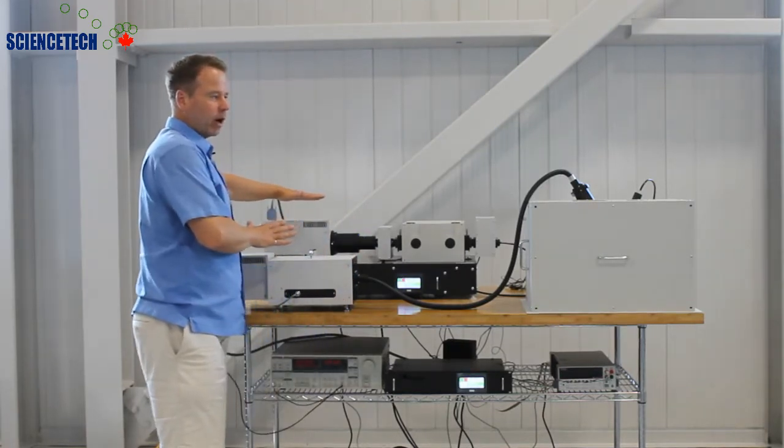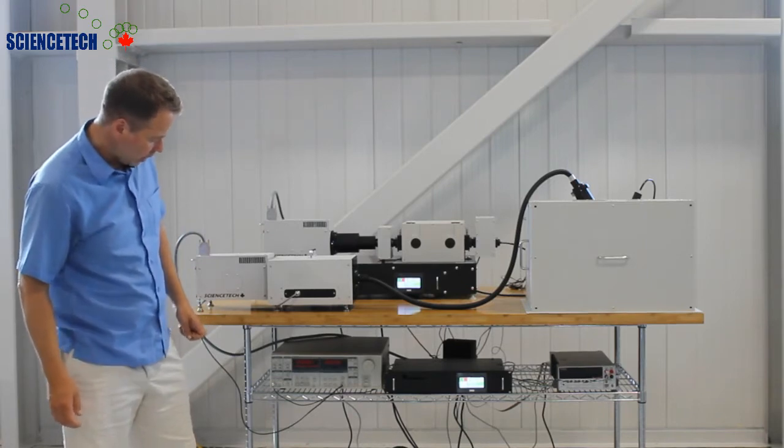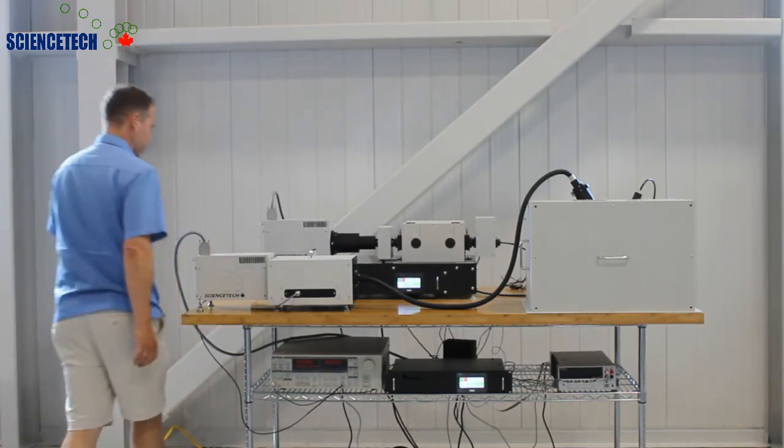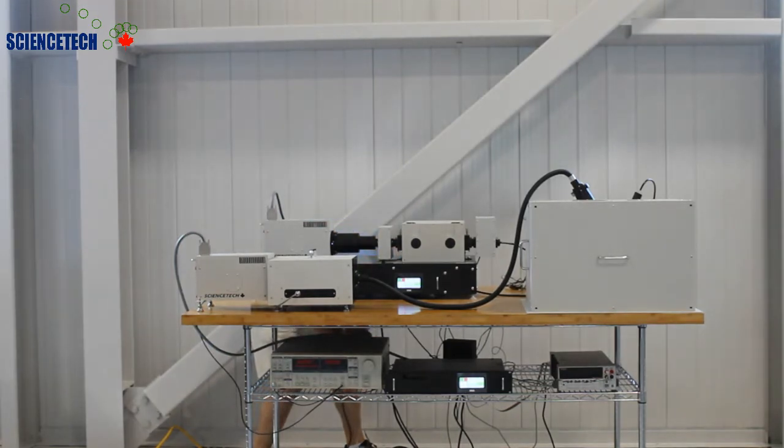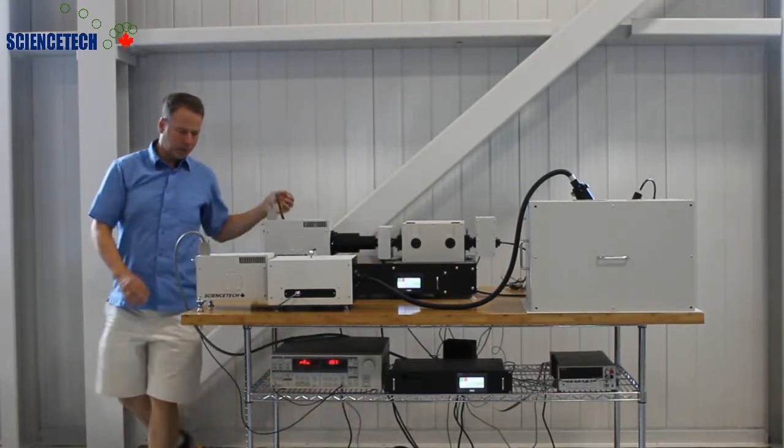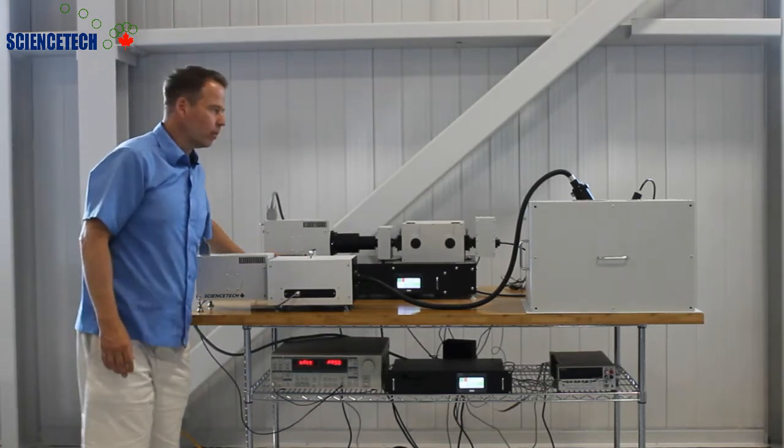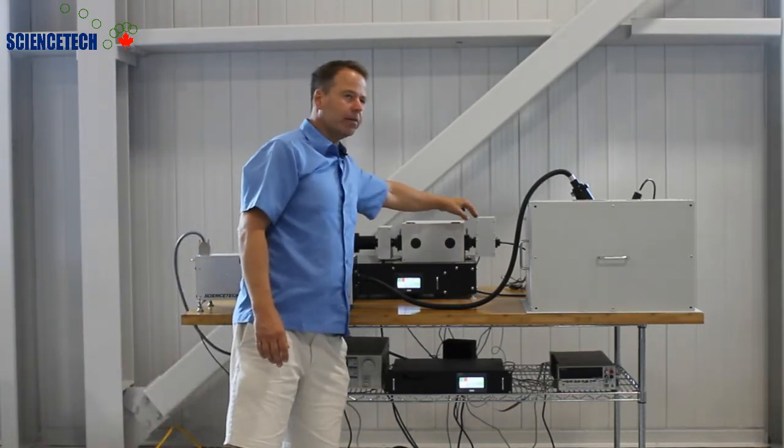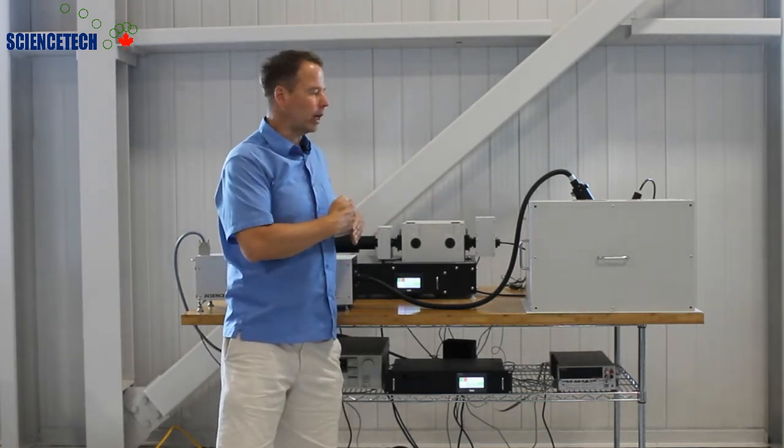Now that our lamps are on, we'll turn on the more sensitive equipment, including the lock-in amplifier. The lock-in amplifier works with the chopper, which is installed here in order to pick up the chopped monochromatic light.